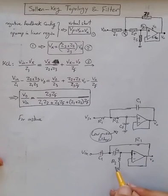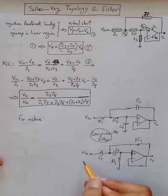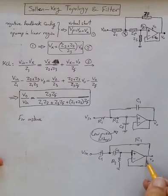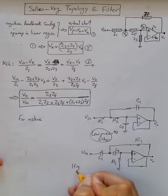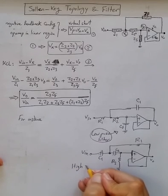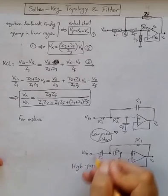this circuit is going to kill DC and low frequency voltages and it's going to pass with unity gain high frequency components. So it's a high pass filter.